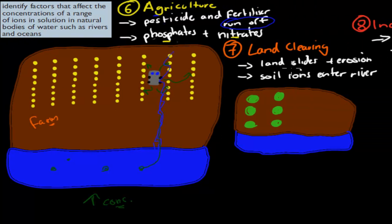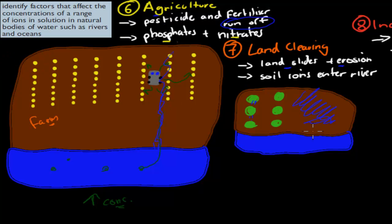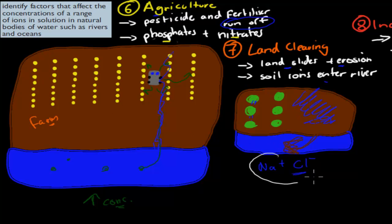Also, land clearing is a problem because it can lead to more landslides or erosion. When we have rain normally, trees will absorb the rain — they basically drink it up. But if we have removed that forest through land clearing, and it rains, the water is not absorbed by the trees. That means we're going to have more muddy areas, and muddy areas often lead to erosion and landslides. All of that dirt and mud ends up in the ocean or river, bringing all the different types of ions which were in the soil — for example sodium and chlorine — into the actual river.